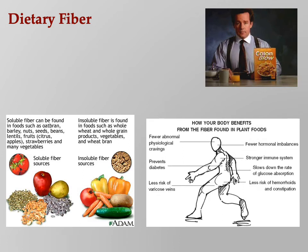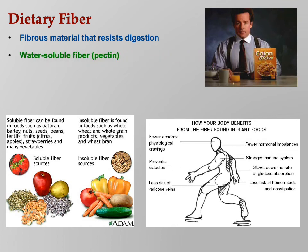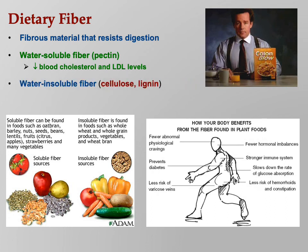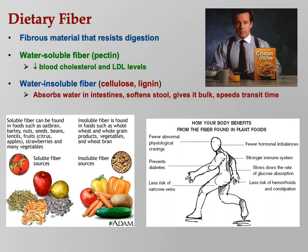Fiber is important — like a scrubber for your intestines. Fibrous material resists digestion, and that's okay. Water-soluble fiber like pectins can lower blood cholesterol and LDL levels — found in many fruits. Insoluble fiber like cellulose and lignin absorbs water in the intestines, softens the stool, gives it bulk, and speeds transit time. Healthy digestion requires dietary fiber — without it, you're more likely to have intestinal troubles.